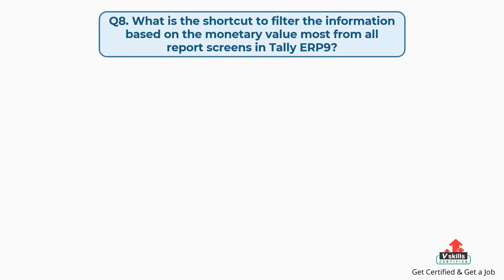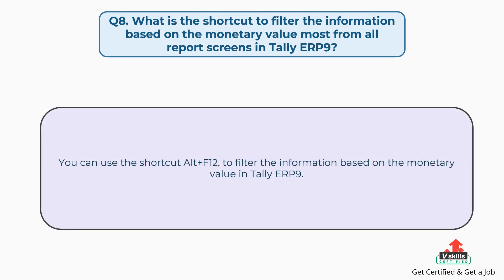Question number eight: what is the shortcut to filter the information based on the monetary value from all report screens in Tally ERP9? You can use the shortcut ALT plus F12 to filter the information based on the monetary value in Tally ERP9.